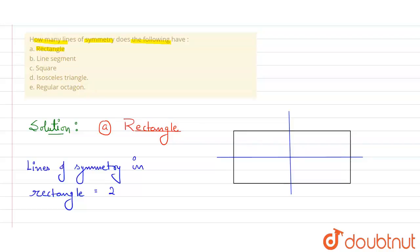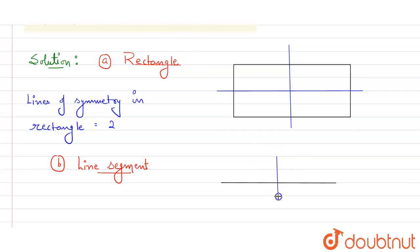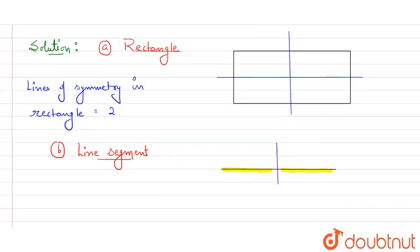Now let's come to Part B — the line segment. Let me draw a line segment here. It is clearly visible that a line segment will have only one line of symmetry. If I draw a perpendicular line through the middle, it will divide the whole line into two equal, identical parts on the right and left side.